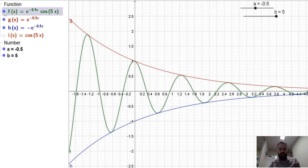Bang. All right. So it's a combination of our exponential function and our periodic function. And you can see it's getting smaller and smaller and smaller,